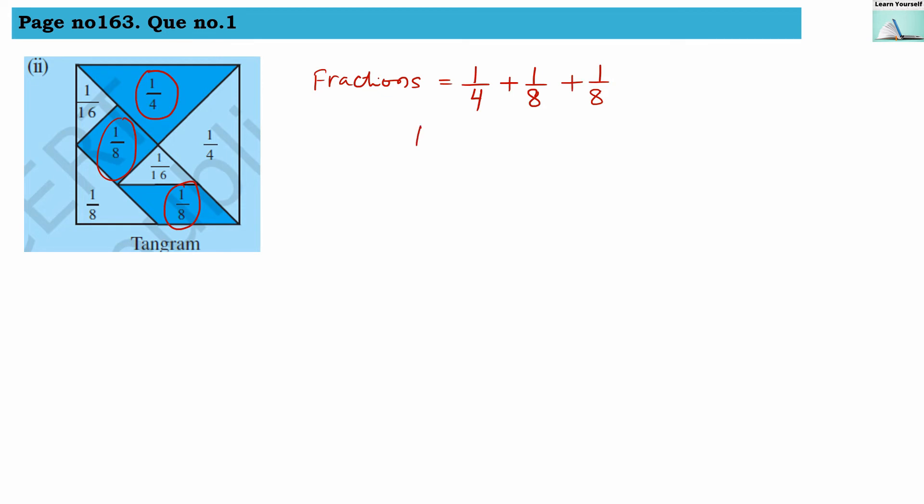Now let us take LCM. LCM here is 8. So here we have to multiply 2 to this first fraction to convert this denominator into 8. So 1 into 2, 4 into 2 plus 1 by 8 plus 1 by 8. So we will get here 2 plus 1 plus 1 divided by 8 because our denominator is same now. So 2 plus 1 plus 1 will give us 4 divided by 8. Once we will simplify this we will get 1 divided by 2.